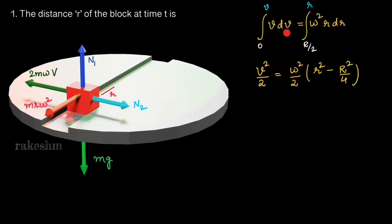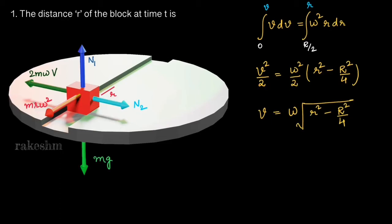Integrating, the left side gives v²/2. Substituting limits: v²/2 - 0 = ω² (taken outside as a constant) times the integral of r·dr, which gives r²/2. Substituting the limits and simplifying, we get v²/2 = ω²/2·(r² - R²/4). Cancelling the 2 on both sides and taking the square root, we get v = ω·√(r² - R²/4).